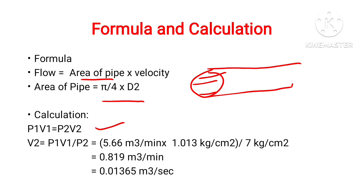We have the initial pressure P1 and initial volume V1, and we have to calculate the final volume V2 after compression. Putting all these values into the equation, after calculation we get V2 equal to 0.819 meter cube per minute. We want this value in meter cube per second, so we divide by 60, giving us 0.01365 meter cube per second.